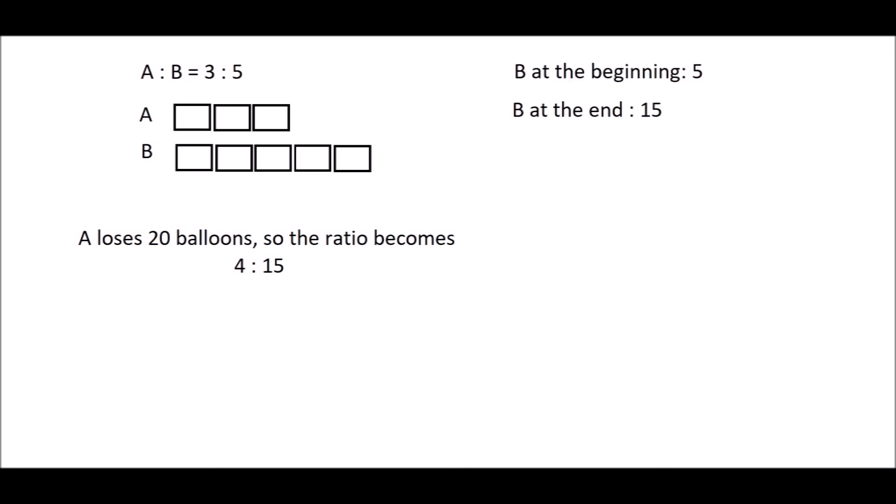Because B doesn't change, we have to make them the same. At first it's 5, and at the end it's 15. So make it into 15 by multiplying it with 3. So 3 to 5 becomes 9 to 15, while the 4 to 15 stays the same.